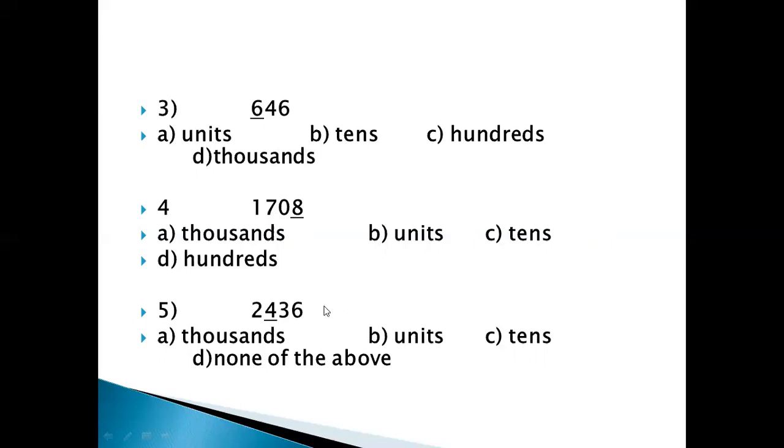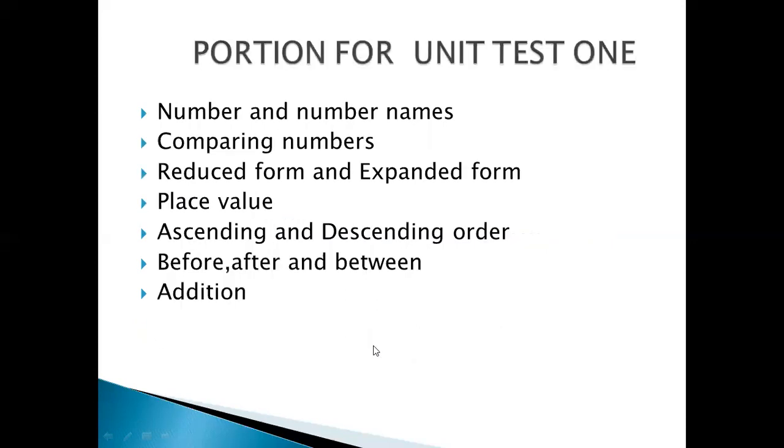So if you think that this answer is not there in option A, B or C, then maybe option D is the correct answer for you. So none of the above means it's neither A, it's neither B nor it's C. So your answer could be option D because you think what the answer could be.